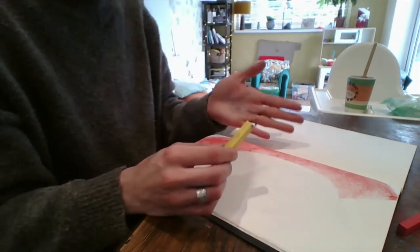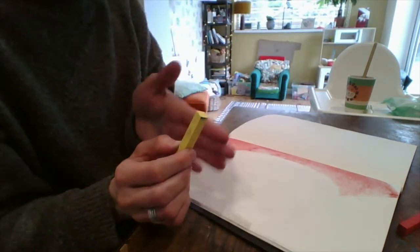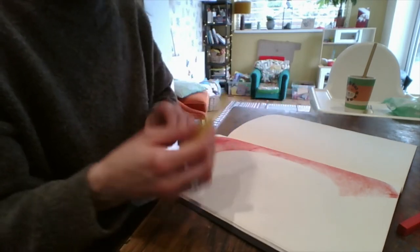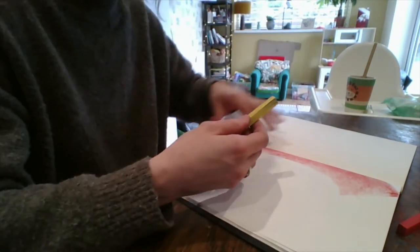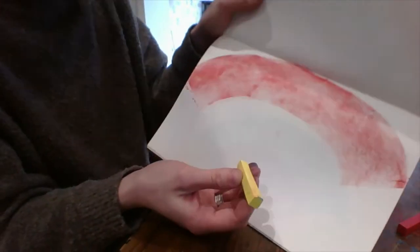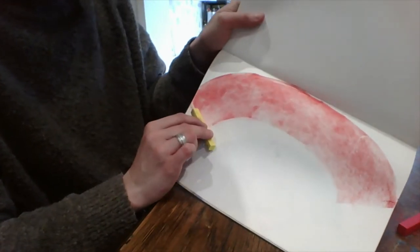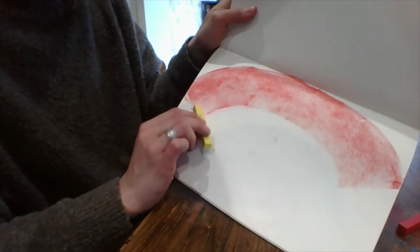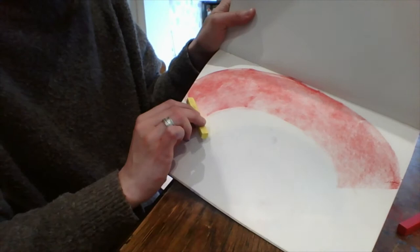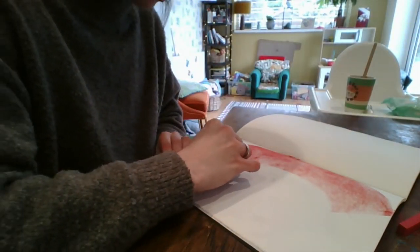You're then going to take a yellow because if you think about the rainbow, we've got red, orange, yellow, green, blue, indigo, violet. So we need an orange next. But rather than taking an orange out of the pack, I'm going to use the side of this and I'm going to do it about halfway from the bottom of the red so that some of it will be bright yellow and some of it will be orange where it mixes.